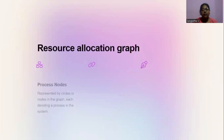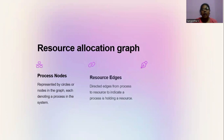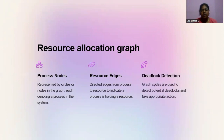Resource allocation graph. Process nodes are represented by circles or nodes in the graph, each denoting a process in the system. Resource edges are directed edges from process to resource to indicate a process is holding a resource. Graph cycles are used to detect potential deadlocks and take appropriate action.